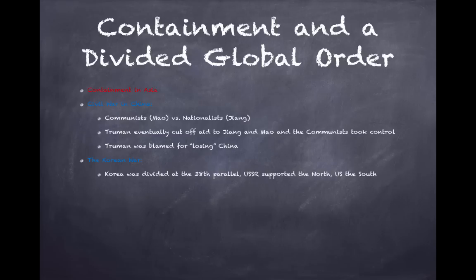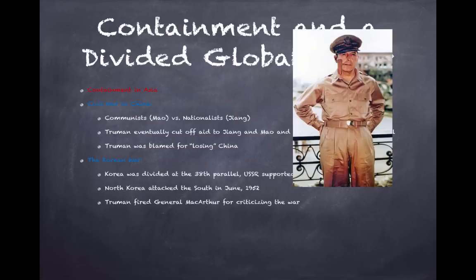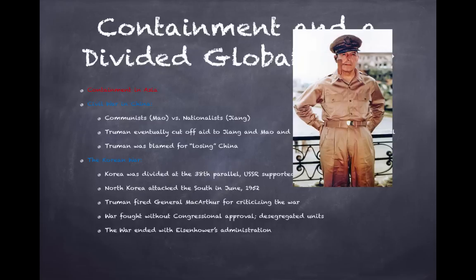Korea was divided at the 38th parallel — the Soviet Union supported the North, the US supported the South. North Korea launched a surprise attack on the South in June 1950. Truman fired General MacArthur for criticizing the war; MacArthur wanted a larger-scale conflict while Truman wanted a limited one. The war was fought without congressional approval, and for the first time, desegregated units had African Americans and whites fighting alongside each other. The war ended under Eisenhower's administration.